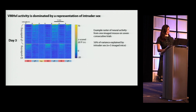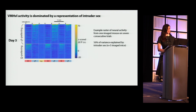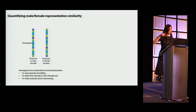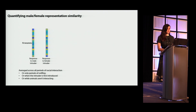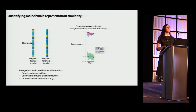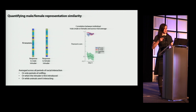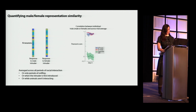There are interesting findings with the representation of intruder sex. Male and female representations are very dissimilar, and we quantified this by taking the average response of VMHVL neurons to a male versus a female — during all social interaction periods, during sniffing only, at introduction, or when together but not interacting. We then looked at Pearson's correlation between male and female representations. Each point represents a trial on day three: male-to-average-male in blue, female-to-average-female in red, and male-to-female cross-comparisons in green. Unsurprisingly, male and female representations are very uncorrelated.